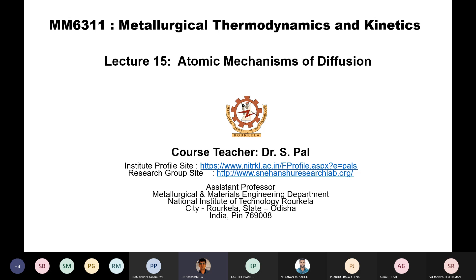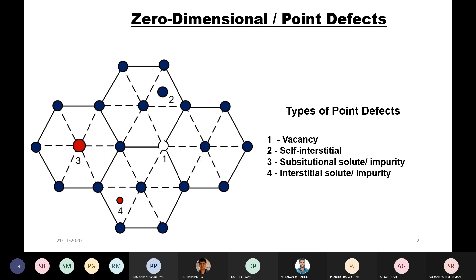Today we are going to discuss about the atomistic or atomic mechanism of diffusion. In order to understand the atomic mechanism of diffusion, one should know about the defects of a material. At least for the metallic system, the crystalline material, we should know the defects in crystalline solids — what are the different kinds of defects, their dimensionality, and how they are going to impact on the diffusion process.